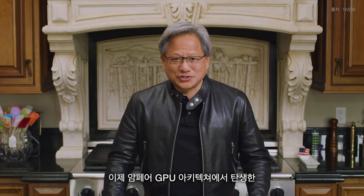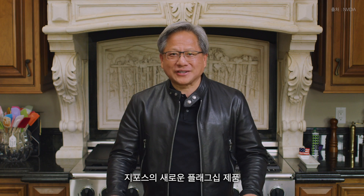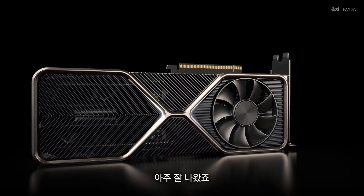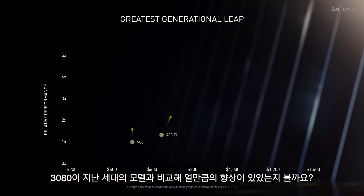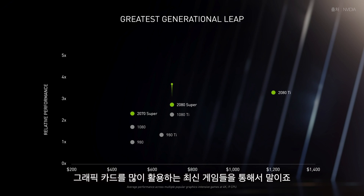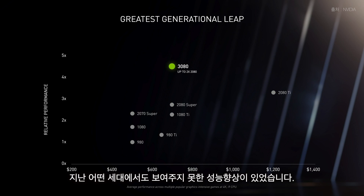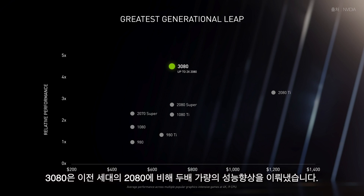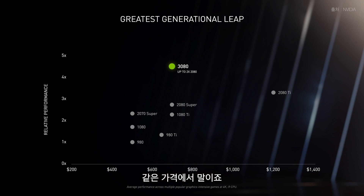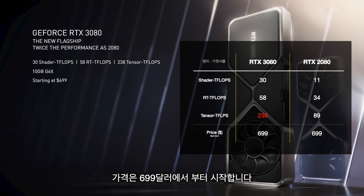Ladies and gentlemen, our new flagship GPU: the NVIDIA GeForce RTX 3080. It is wonderfully crafted. The 3080 stacks up impressively against previous generation architectures on the latest graphics-intensive games. Ampere is the biggest generational leap we've ever had. The 3080 is twice the performance of the 2080 at the same price, starting at $699.